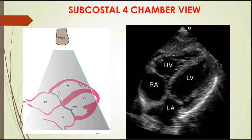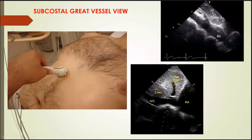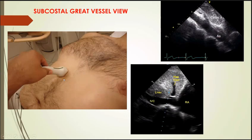Another important application of the subcostal view in day-to-day practice is assessing the IVC. Cardiologists get calls from the ER or ICU to assess the volume status of the patient. We measure the IVC to determine whether to give fluids or stop fluids. This subcostal great vessel view is very important for IVC assessment and hemodynamic monitoring. The probe is placed in the subcostal region with the pointer pointing towards the neck of the patient.